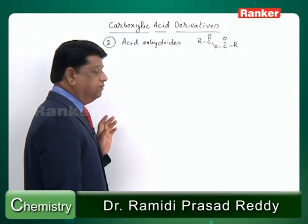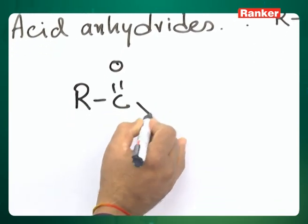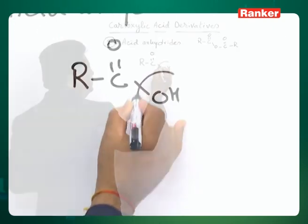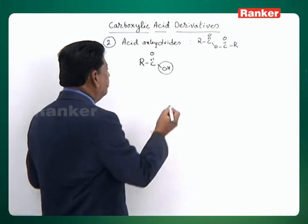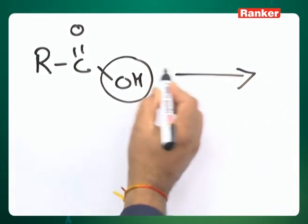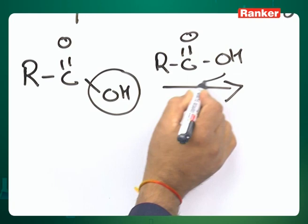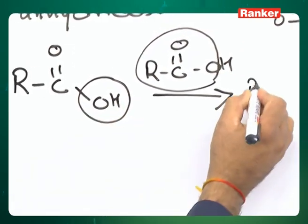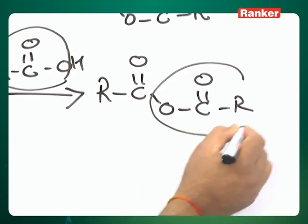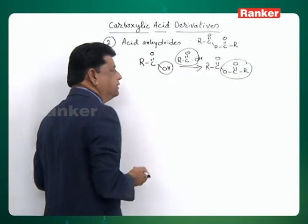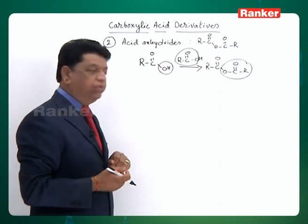Let us take today the second part of acid anhydrides. In carboxylic acid, we have an OH function attached to the carbonyl. This OH, if it is suitably replaced by different groups, we get acid derivatives. When this group is replaced by another carboxylic acid, the OH and H go and the entire group of another acid enters. So you get RCOOR. This new group is called acetoxy or acyloxy. In place of hydroxy, we have an acyloxy group — such compounds are called acid anhydrides.